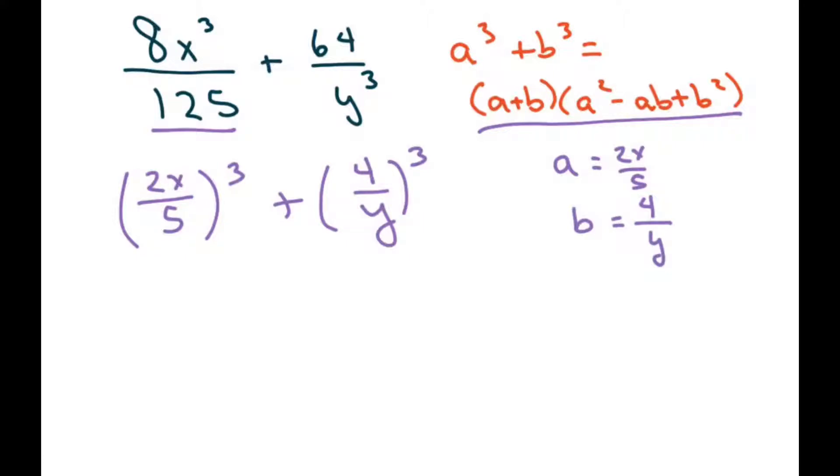All right, so let's do that, and we have 2x divided by 5, plus 4 divided by y, and now we square this piece, which is going to be 4x squared over 25, minus, you multiply these two pieces, and you get 8x divided by 5y. And then you square this piece, that's not 4 over 6, that is 4 over y. So that's going to be 16 over y squared. And that is your final answer.